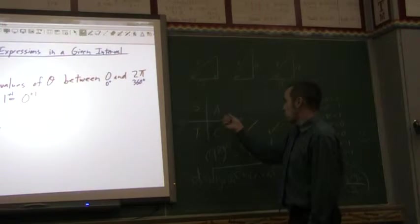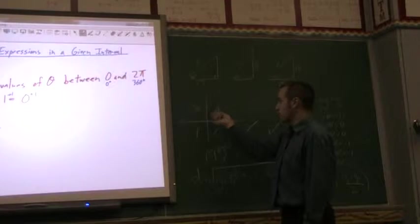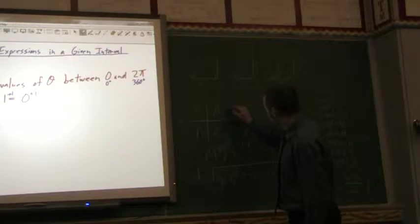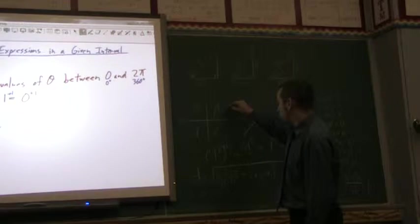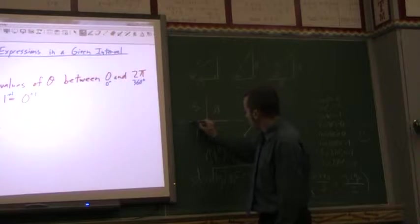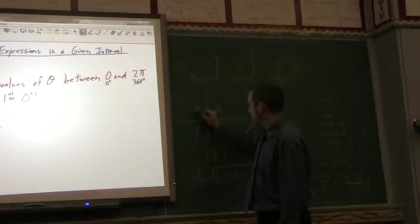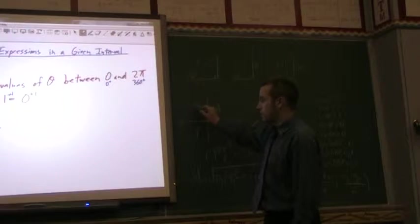Sine is positive in the first quadrant, where everything is positive, and the second quadrant. So I'm looking at 30 degrees into this quadrant. 30 degrees into this quadrant is just 30. 30 degrees into this quadrant, the second quadrant, is 180 minus 30, in other words, 150.